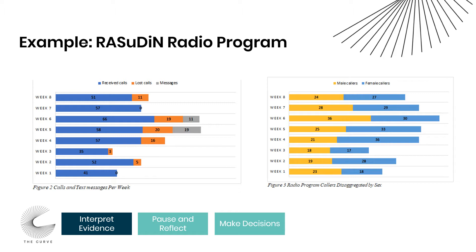Another example of analysis strategies comes from the Rasuddin example introduced last week. The project used communication to increase demand for family planning among women and men through an integrated strategy employing mass media and community mobilization. Radio consistently remained a significant means of disseminating information, especially to rural and underserved areas. They deployed a radio program to disseminate information on modern childbirth spacing methods and family planning techniques, including DMPA-SC. The radio program was proposed to air in 9 out of 10 states, with each radio station airing 24 episodes. Rasuddin conducted an analysis on the first 12 episodes to improve the next 12.